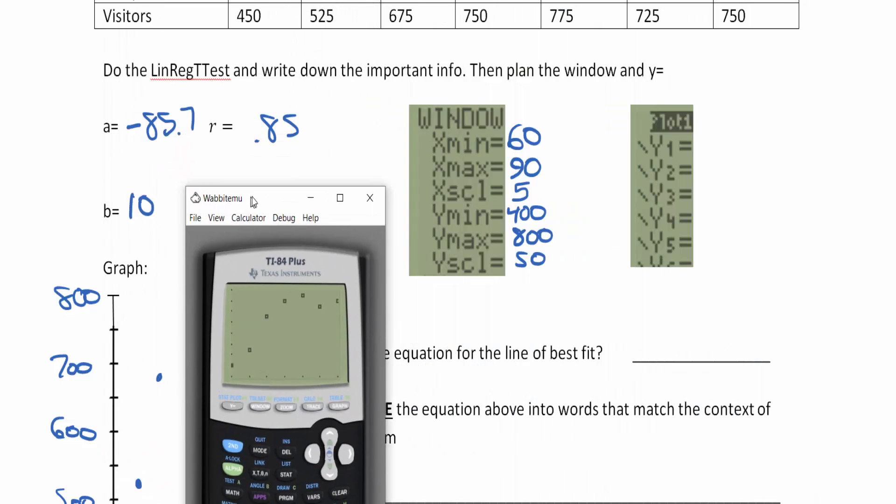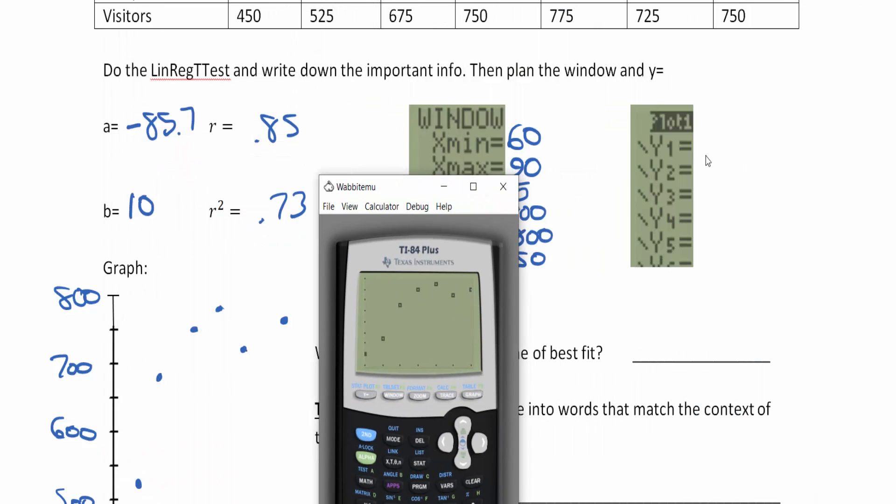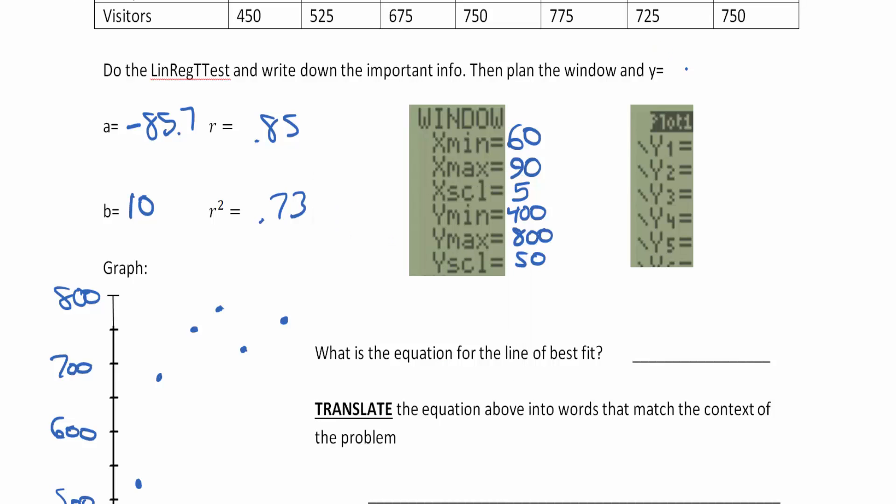Now what I want to do is type in my y equals equation right here. That y equals equation is built off of the y equals a plus bx. This was at the top of the screen on the linear regression t-test. So that means we want our y1 to be negative 85.7, using a negative sign not the subtraction sign, plus 10x.